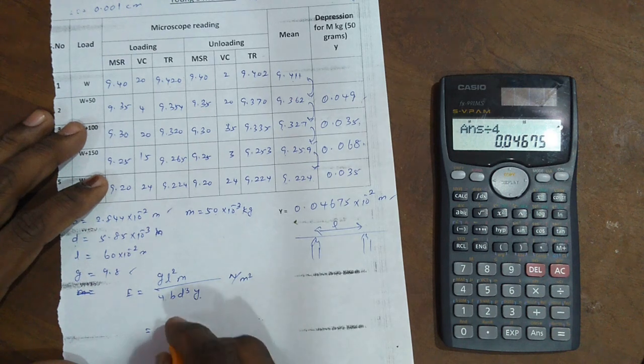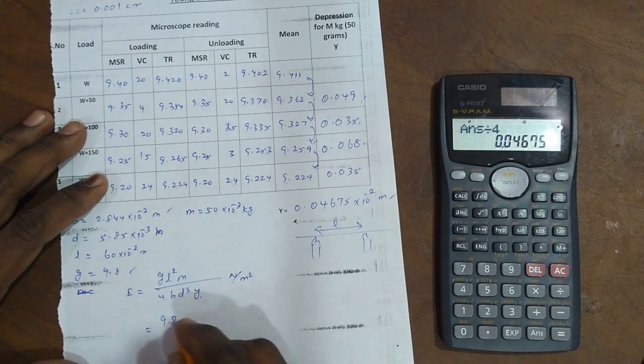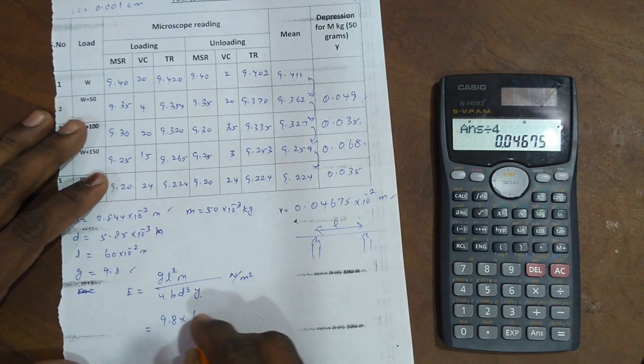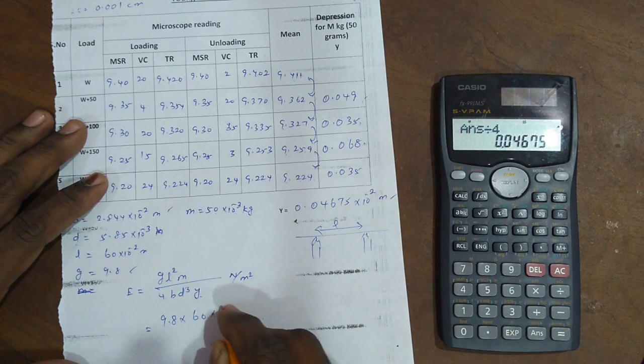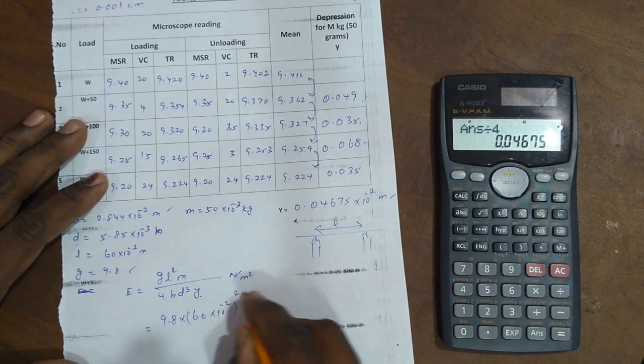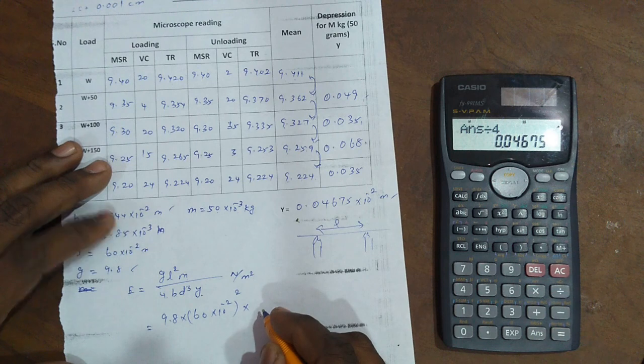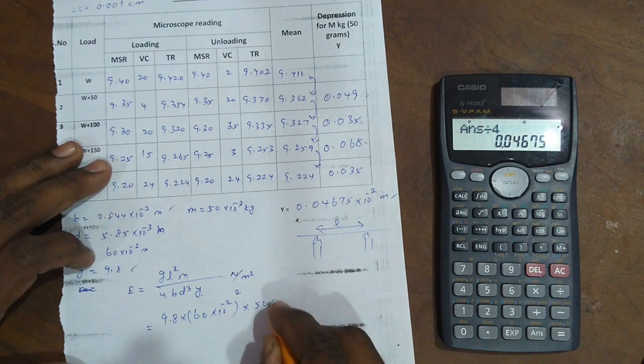In this case, g value is 9.8 into l. l is 60, so into 10 to the power minus 2 whole squared into m. m value is 50 into 10 to the power minus 3.